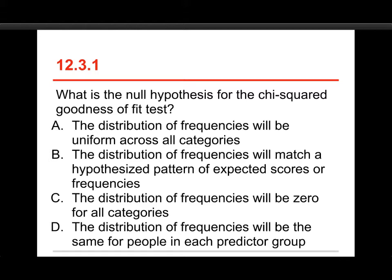C, the distribution of frequencies will be zero for all categories, or D, the distribution of frequencies will be the same for people in each predictor group. Well, the one that we're marking correct in this case is B, the distribution of frequencies will match a hypothesized pattern of expected scores or frequencies.